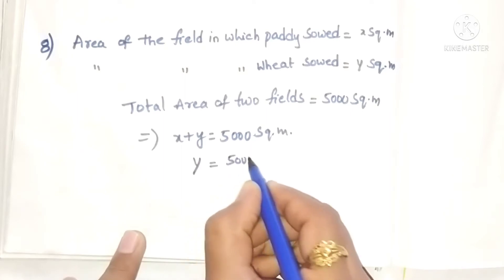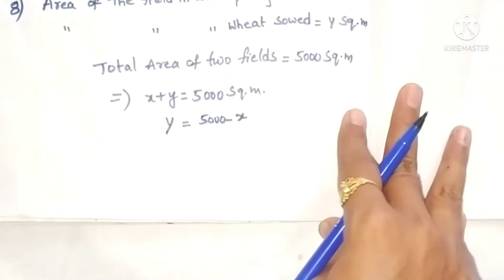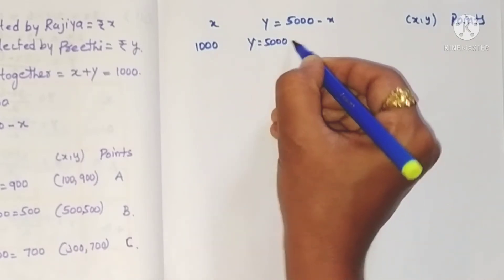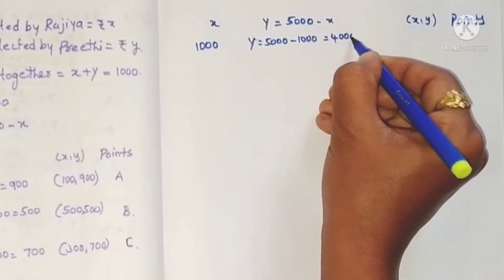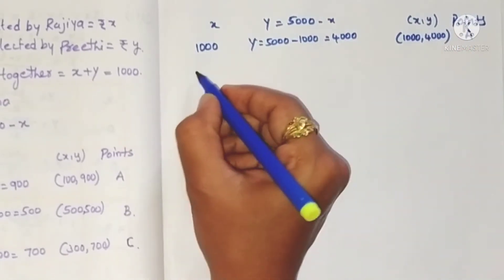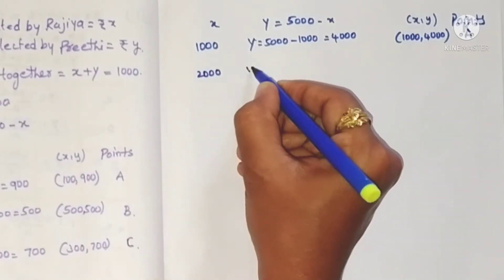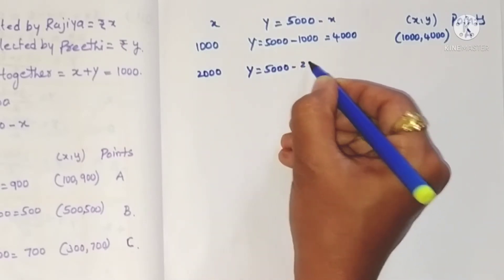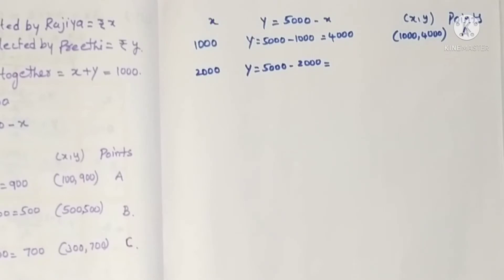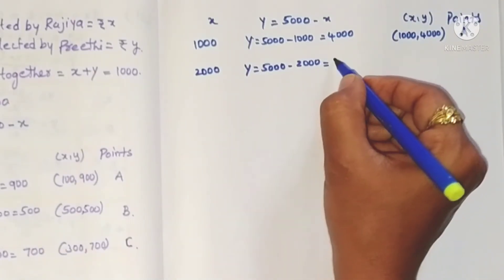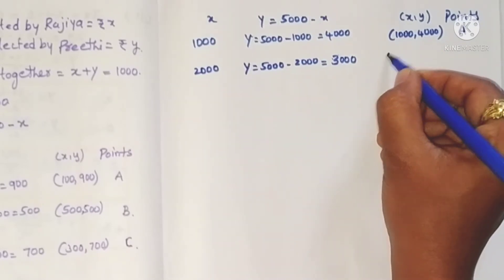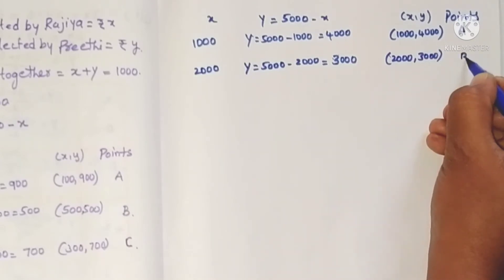Now, Y equals 5000 minus X. We are not taking zero because each field must have some area — both paddy and wheat fields exist. If X is 1000, then Y equals 5000 minus 1000, that is 4000. Point A is (1000, 4000). If X is 2000, then Y is 3000. Point B is (2000, 3000).